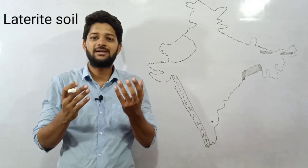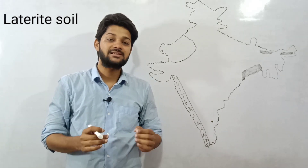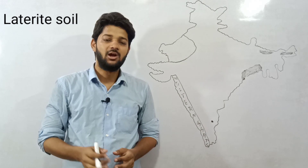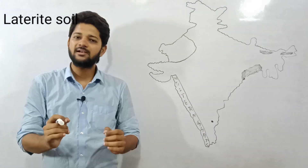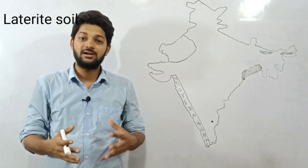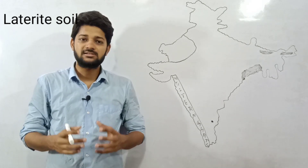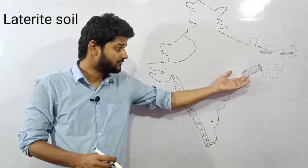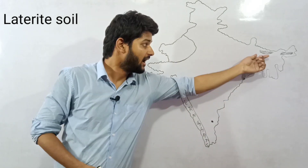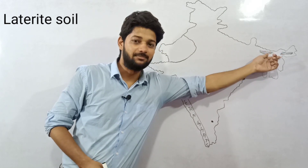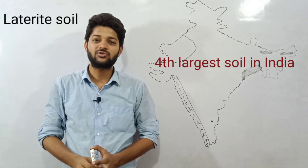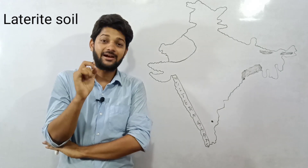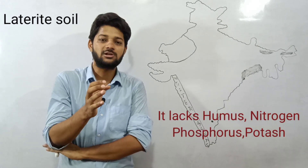The next point: the word 'laterite' is related to the word 'later' meaning brick. Brick-coloured laterite soil is excellent for making bricks. The states where laterite soil is found are Kerala, followed by Maharashtra, then Karnataka, Odisha, Tamil Nadu, a little in Madhya Pradesh, and in the northeastern region that is Meghalaya and Assam. Laterite soil is the fourth largest soil found in India after alluvial soil, black soil, and red soil. Laterite soil lacks humus, nitrogen, phosphorus, and potash.